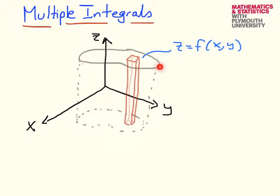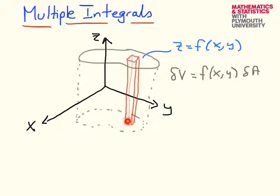Supposing we wanted to calculate this volume. Just like in the Riemann integral, we make an approximation using not lots of little rectangles, but lots of little cuboids. The volume of each cuboid, which I'll call delta V, is given by the height — the value of the function — multiplied by the area of the base, which is a little rectangle. So delta V equals the height multiplied by delta x times delta y. We then add lots of these cuboids together to cover the whole region, giving us the entire volume.